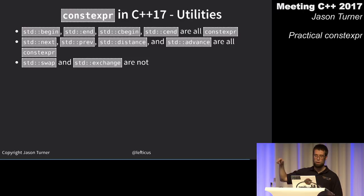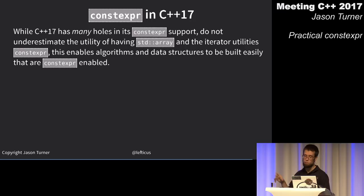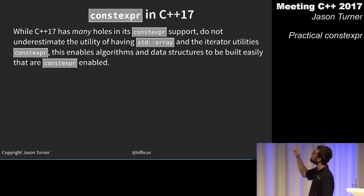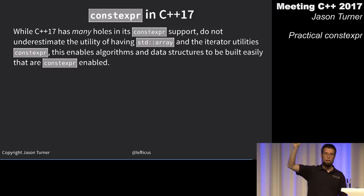C++17 has many holes in its constexpr support, but we shouldn't underestimate it. The fact that std::array can be used in a constexpr context is absolutely huge — it enables the containers and data structures we might want to use in a constexpr context.